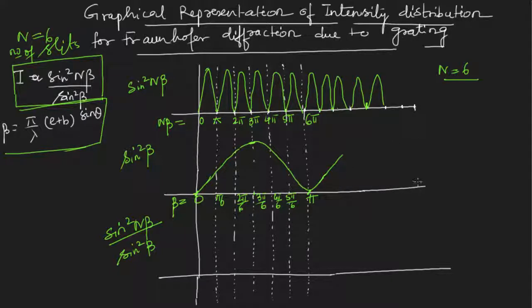I want to superimpose these two curves and try to find sin square n beta divided by sin square beta. Now you see that for beta equal to 0, I have a minima for sin square n beta. For beta equal to 0, I have a minima again for sin square n beta. When I divide these two values, I will get 0 by 0 form and by L'Hôpital's rule, you can prove that at beta equal to 0, I will get maxima. That is what we got in the intensity pattern of grating. At beta equal to 0, I will get maxima here.